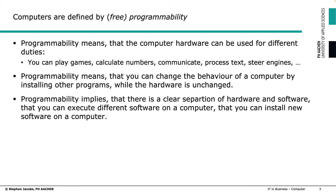In this respect, the computer becomes a kind of universal device where you can do lots of things, depending only on the software you download. Programmability implies a clear separation of hardware and software, so you can have hardware, download and install software, and by that change what you can do with your computer.